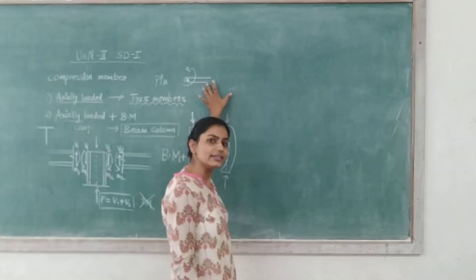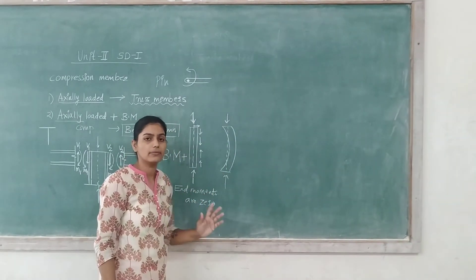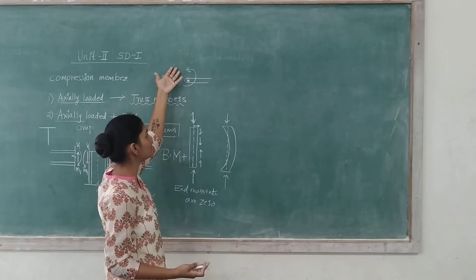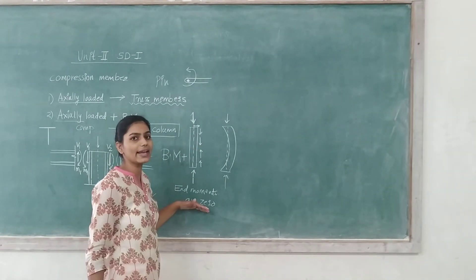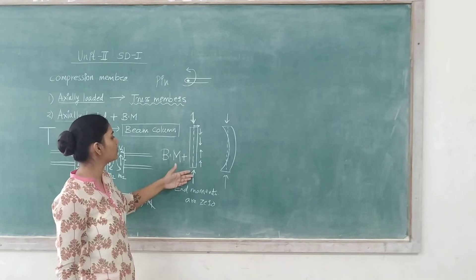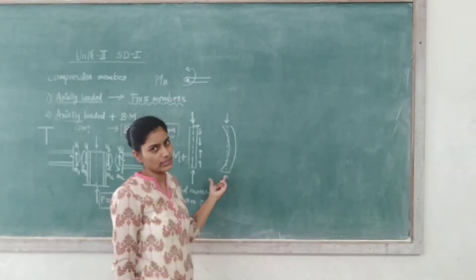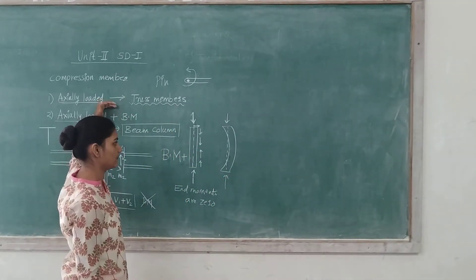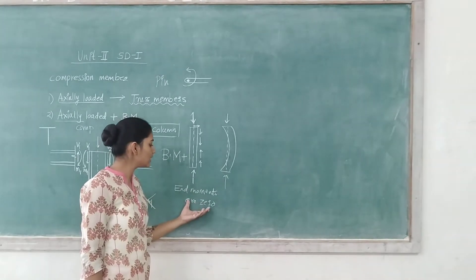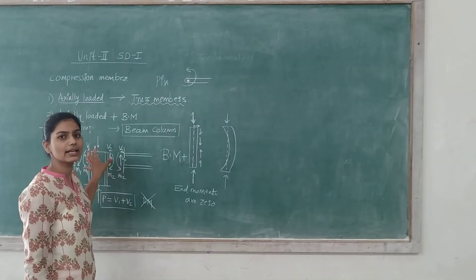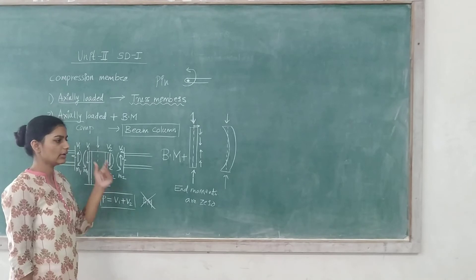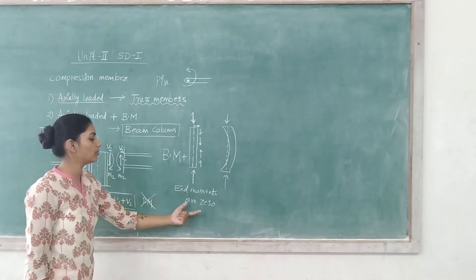If a pin joint is provided, it will allow free rotation. When rotation is allowed, the bending moment at that joint becomes zero because there is no perpendicular distance — if it rotates freely, any moment acting on your truss member will be zero. In that case, all compressive forces will pass through the axis of the member. So the condition we should check is: if it is allowing free rotation at the ends, then the end moment will be zero.